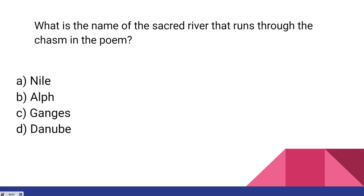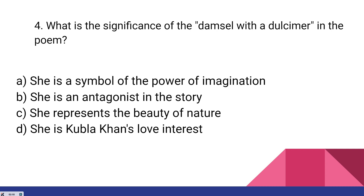Third question: what is the name of the sacred river that runs through the chasm in the poem? The answer is option B — Alph. But if you have studied further, there is a reference to Mount Abora, and the river starts from the tip of the Nile, so that can be confusing. But Alph is the correct answer. What is the significance of the damsel with the dulcimer in the poem?